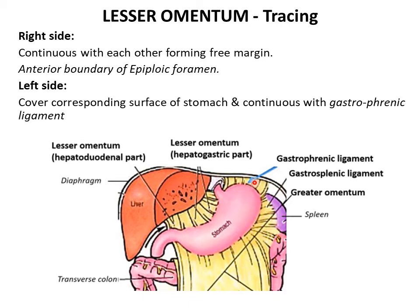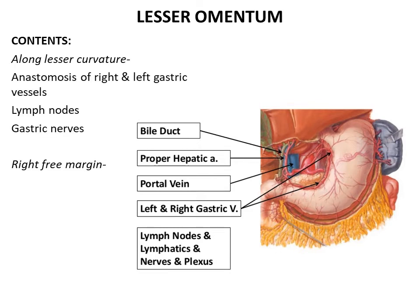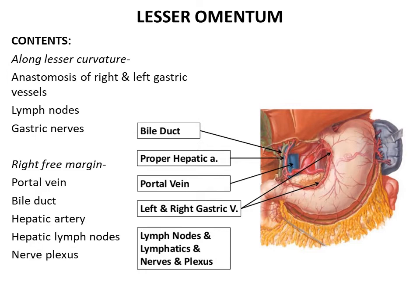The gastrophrenic ligament connects the fundus of the stomach to the inferior surface of the diaphragm. The contents of the lesser omentum include: along the lesser curvature of the stomach, the anastomosis between the right and left gastric vessels, accompanying lymph nodes, and gastric nerves. Along the right free margin lie the important structures — the portal vein, the bile duct, and the hepatic artery — accompanied by hepatic lymph nodes and a nerve plexus.